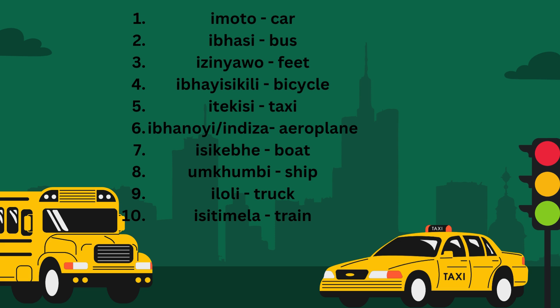I motor ka — a car. I basi — bus. I zinyawo — feet. I baisigili — bicycle. I takisi — taxi. I banui noma indiza — is an aeroplane.